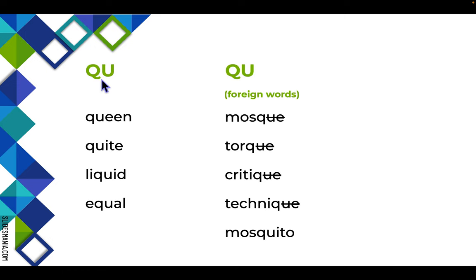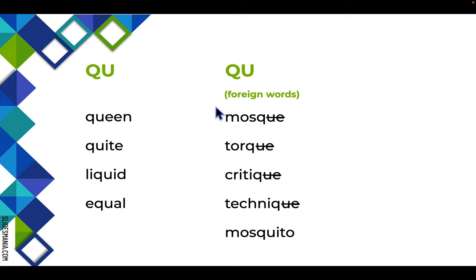In English words, there is always a U after a Q — there are very few exceptions. Together, these letters make the sound /kw/, like in 'queen,' 'quite,' 'liquid,' and 'equal.' In foreign words, which are generally French, Q-U says /k/, like in 'mosque,' 'torque,' 'critique,' and 'technique.' Notice that in these words, the U and E at the end are all silent. Mosquito is not French, so there are no silent letters.